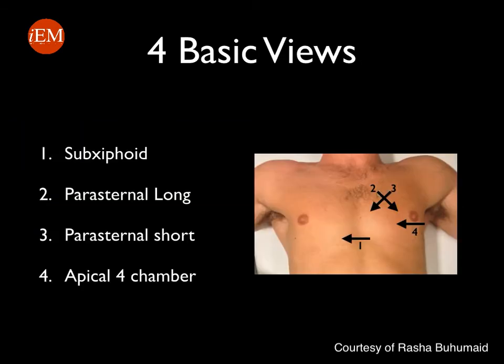There are four basic echocardiography views that we will review: the sub-xiphoid view, the parasternal long view, the parasternal short view, and the apical four-chamber view, which are summarized in the image on the right. We're going to talk about each of these views in detail in the next few slides.